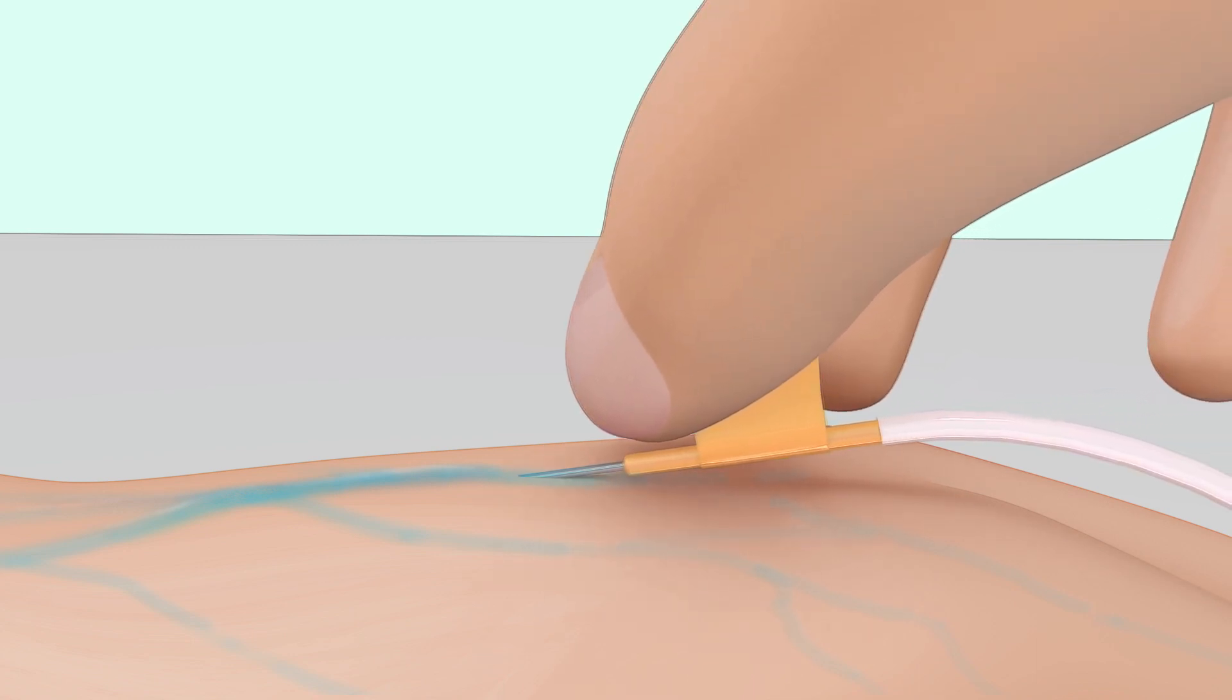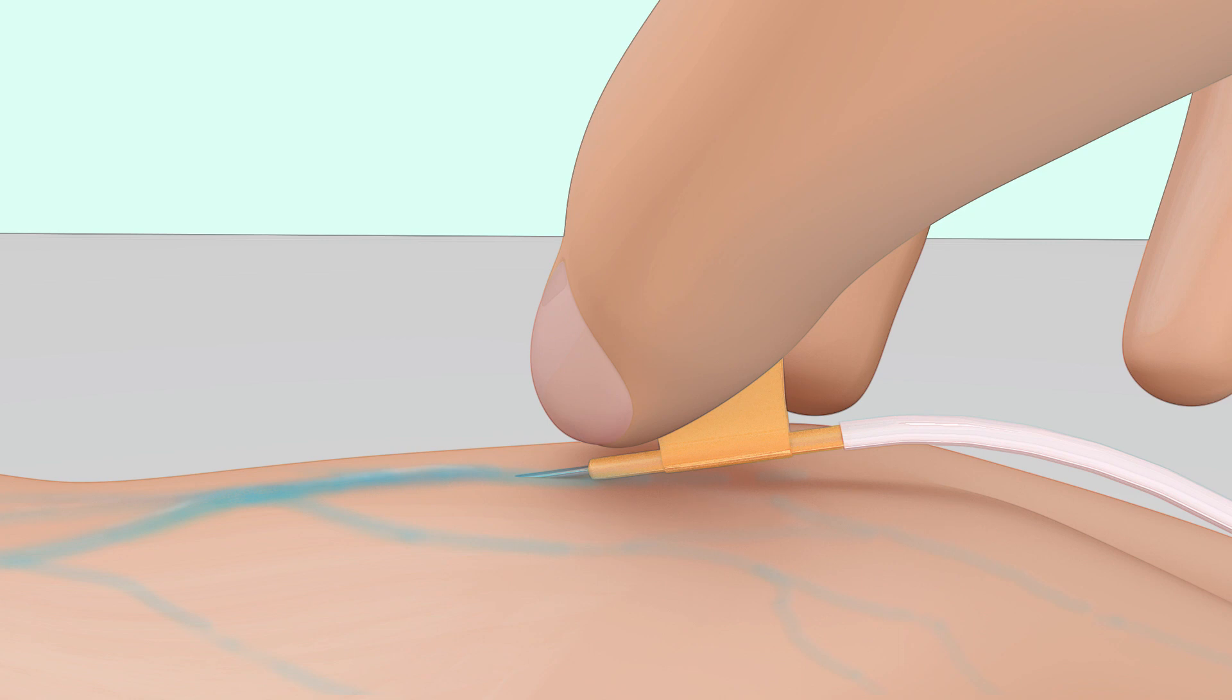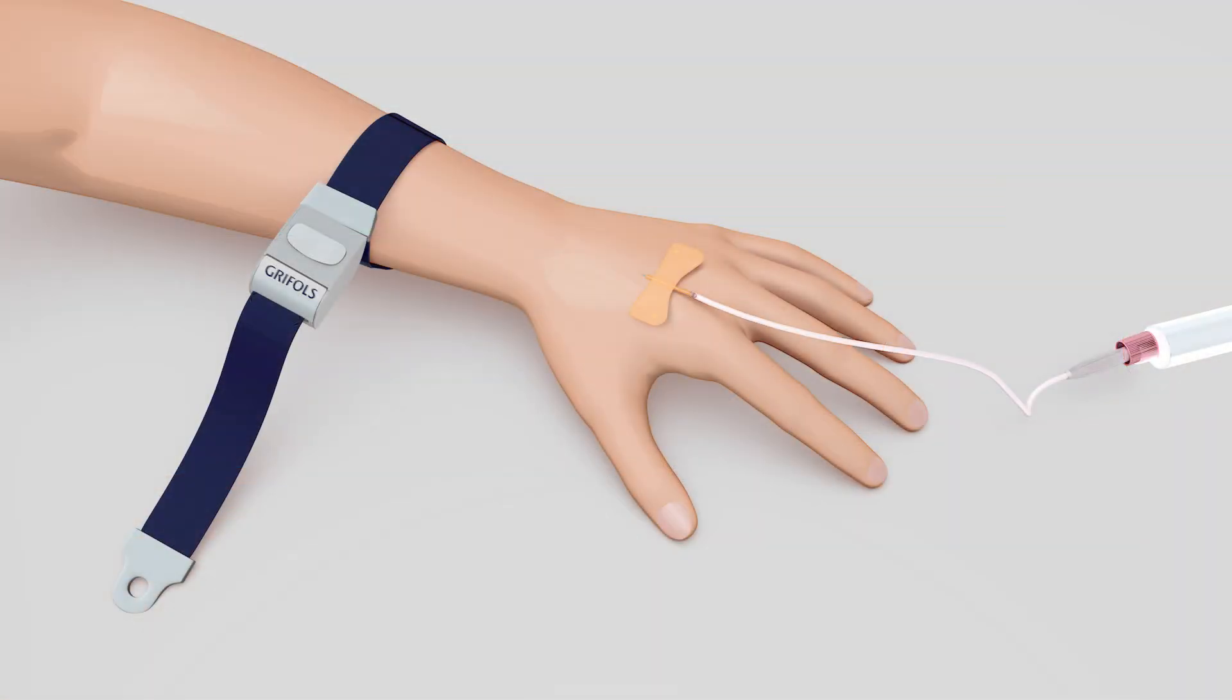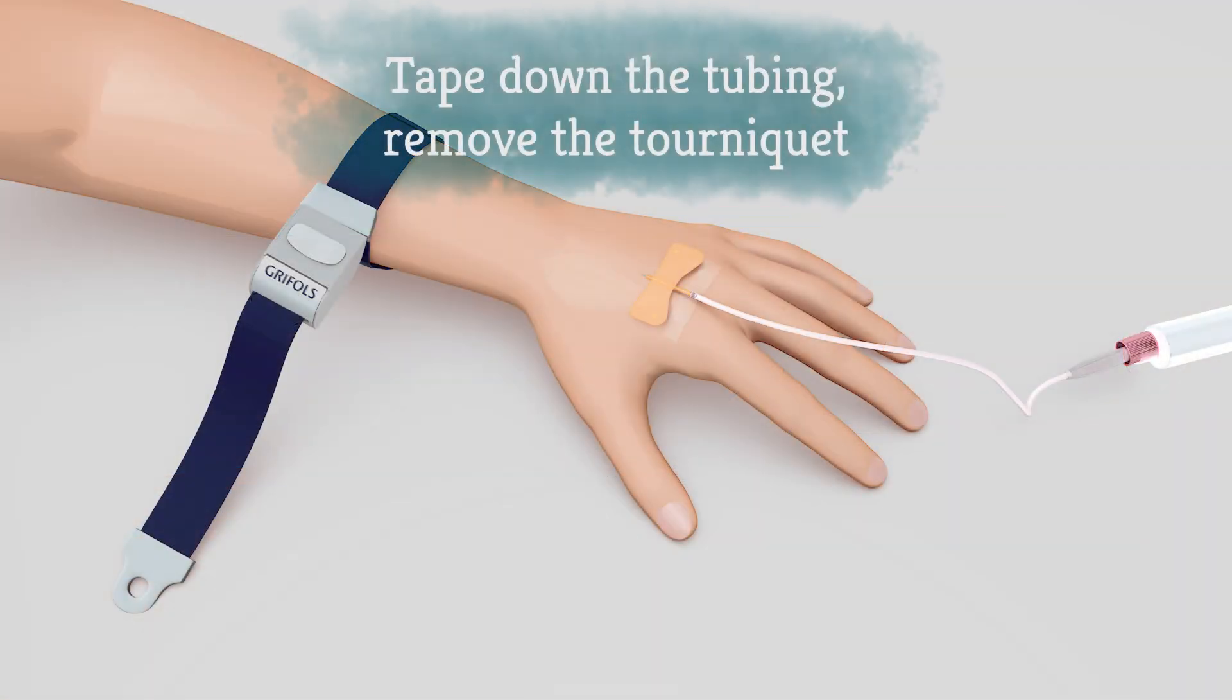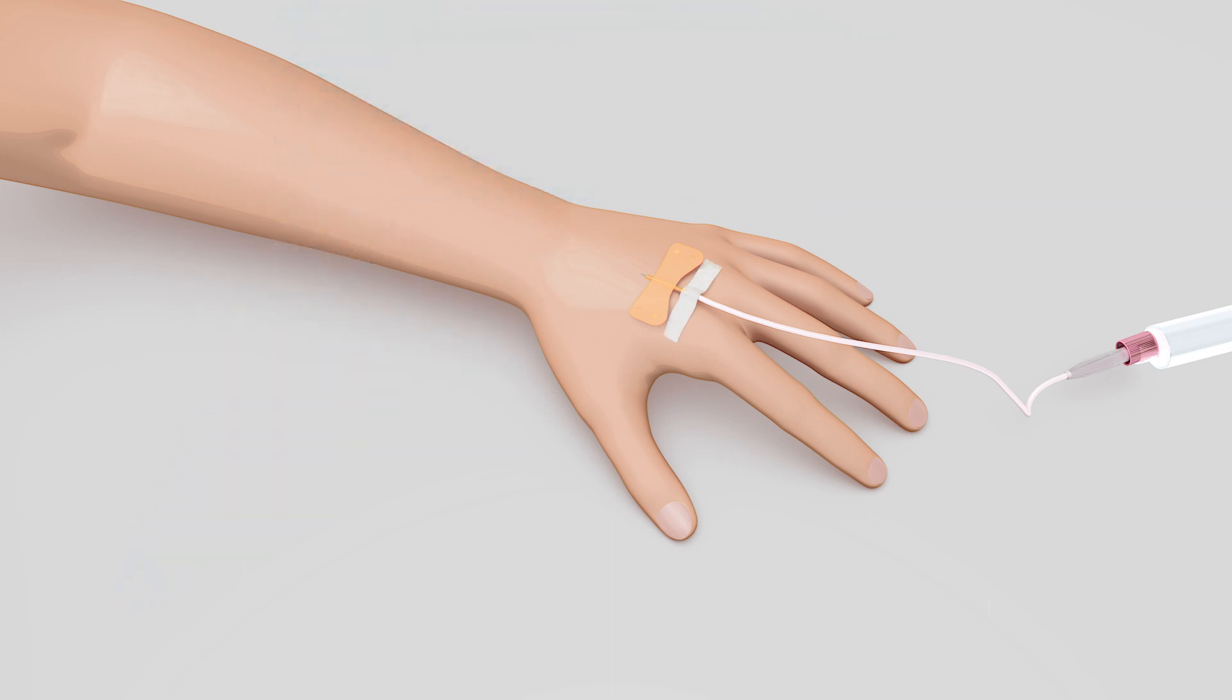Lower the angle of the needle until it is almost parallel with the skin. Don't start injecting the Factor until you see a little blood flow back into the tubing. Once you do, tape down the tubing just below the wings of the butterfly needle and remove the tourniquet.